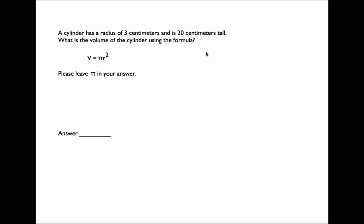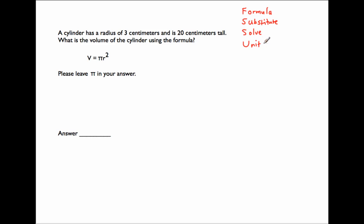Whenever given a formula, you always want to use this acronym: FISU. F stands for Formula — find your formula and list all the variables in it. Next, S is for Substitute — plug all of your values back into the original formula. Then S is for Solve — use order of operations to evaluate. And finally, U is for Units — don't forget your units at the end.